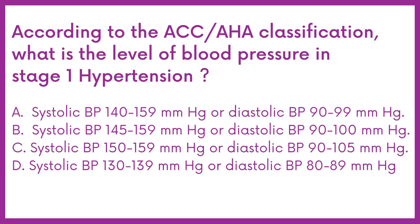Option B: systolic BP 145-159 mmHg or diastolic BP 90-100 mmHg. Option C: systolic BP 150-159 mmHg or diastolic BP 90-105 mmHg. Option D: systolic BP 130-139 mmHg or diastolic BP 80-89 mmHg.